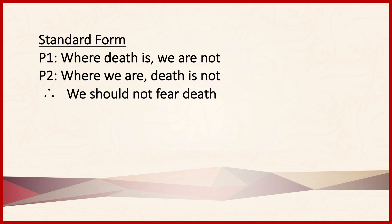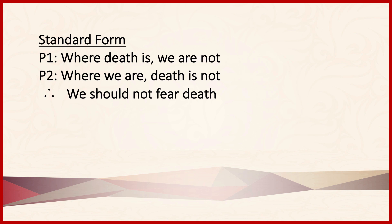One final thing about writing arguments in standard form: a lot of times we'll have very long propositions that would be tedious to write out entirely. So to avoid that, we can use ellipses. For example, suppose we have a premise that reads: 'the square of the triangle's hypotenuse is equal to the sum of the square of its sides.' With ellipses, we can cut out most of that and write 'the square of...' — that's the ellipsis — and then the end of the proposition, 'its sides.' If you're going to use ellipses, it's important that you include both the beginning and the end of the proposition. A lot of students fall into the mistake of writing the beginning and then never showing where the proposition ends. You will lose points for doing that.